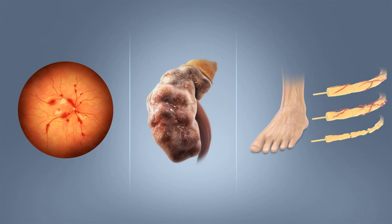If left untreated, diabetes can cause many complications. Acute complications can include diabetic ketoacidosis, hyperosmolar hyperglycemic state, or death. Serious long-term complications include cardiovascular disease, stroke, chronic kidney disease, foot ulcers, and damage to the eyes.